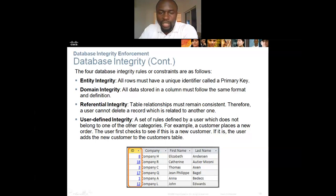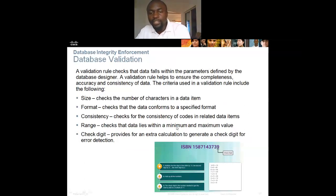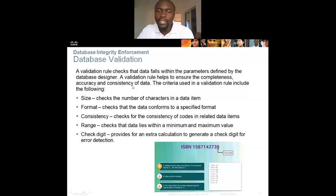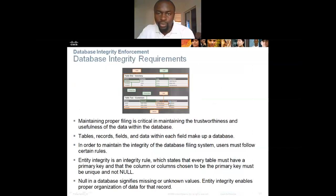The fourth rule is user-defined integrity, which is a set of rules defined by a user that cannot belong to any of the other categories. For example, when a customer places a new order, the user first checks if it is a new customer, and if so, adds the new customer to the customer table. Database validation rules check that data falls within the parameters defined by the database design, helping to ensure the completeness, accuracy, and consistency of data.